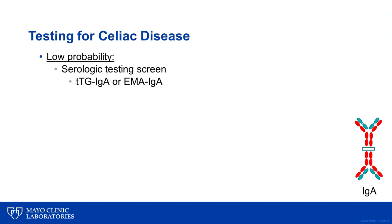The approach to testing for celiac disease depends on the pretest probability of the patient and his or her likelihood of having celiac disease. In patients with low pretest probability, a serologic testing screen is generally undertaken. This involves a tissue transglutaminase or an anti-endomysial antibody test, both of which are IgA tests.